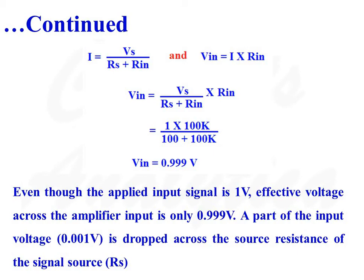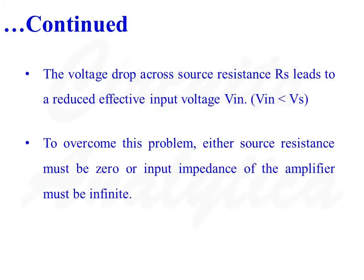Even though we applied 1V as the input signal, across the amplifier input terminals there is only 0.999V. A very small voltage of 0.001V is dropped across the source resistance RS. This voltage drop across RS leads to a reduced effective input voltage VIN, so VIN is less than VS. To overcome this problem, either source resistance RS must be zero, or the input impedance of the amplifier must be infinite. But in reality, RS is not equal to zero and RIN is not equal to infinity.